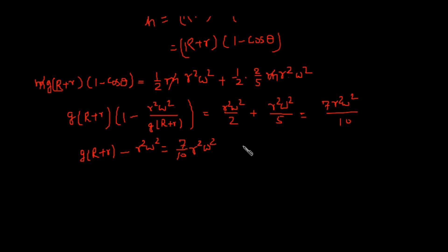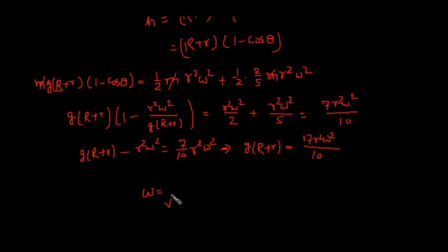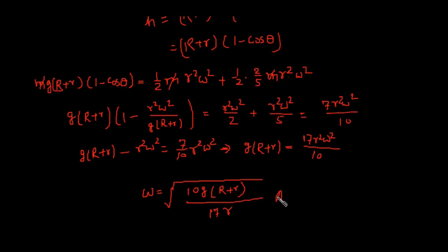From this equation, we can solve for ω: ω = √[10g(R + r) / (17r²)]. This is the answer to the question. Please like and share the video to help other students, and subscribe the channel for further updates.